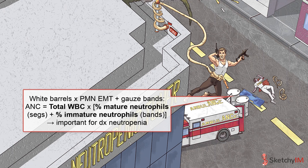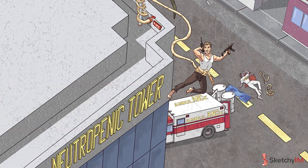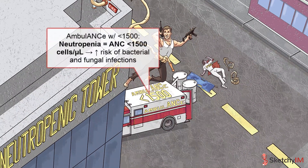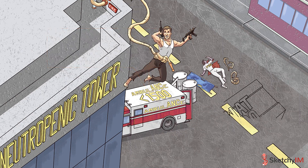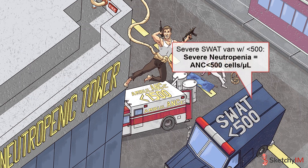Neutrophils are especially important as the body's defense against bacterial and fungal infections. The lower the number of neutrophils and the longer a patient goes with this low count, the higher the risk of getting infected with one of these organisms. Neutropenia is defined as an ANC of less than 1,500 or less than 1,000 cells per microliter, and severe neutropenia is an ANC of less than 500. An ANC of less than 500 or neutropenia greater than 7 days puts patients at an even higher risk for infection.